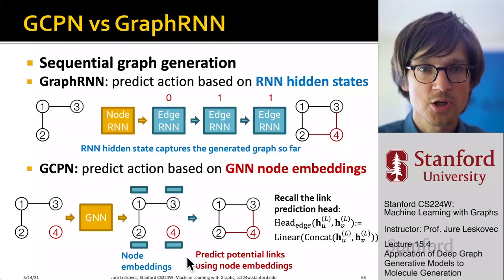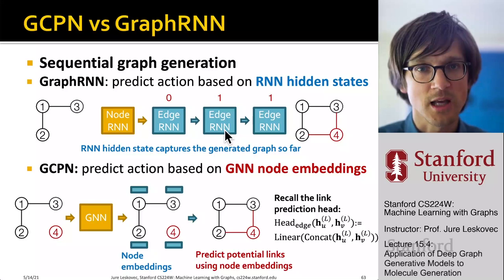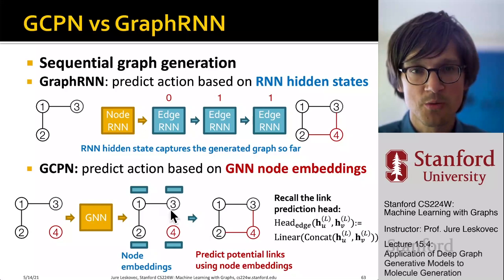That's the difference, and this is much more expressive and robust, but less scalable because we now have to compute these embeddings and evaluate link predictions for every single edge.